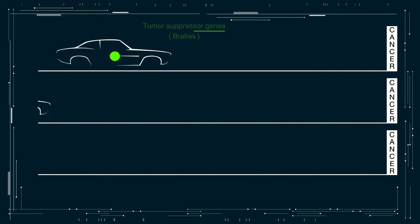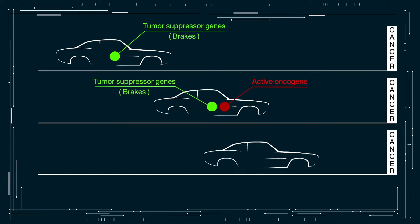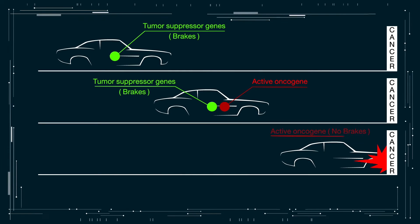Tumor suppressor genes repair DNA mistakes, acting like brakes on a car, and detect oncogenes, which are like the accelerator in a car, and thus stop or prevent out-of-control cell growth, which can lead to cancer.